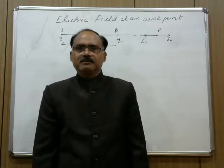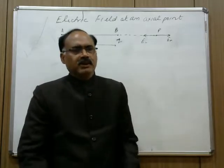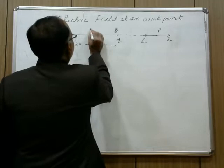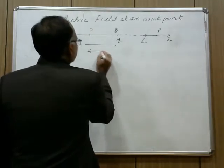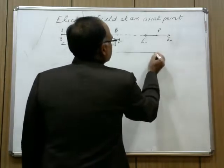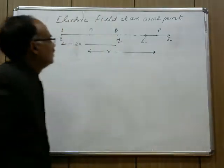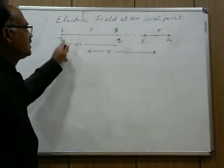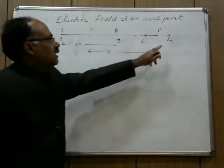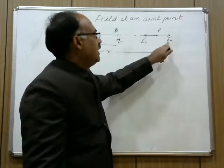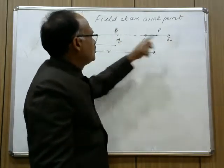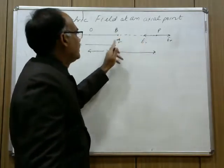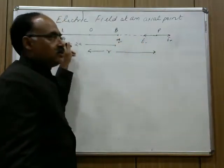Let this point P be at a distance r from the center of the dipole. The length of the dipole is 2a. Here, minus q is the negative charge and plus q is the positive charge. E plus has been marked as the electric field due to the plus q charge at point P, and E minus is the electric field due to the minus q charge at point P.